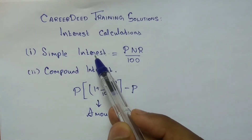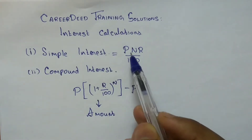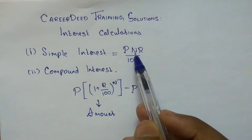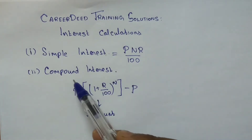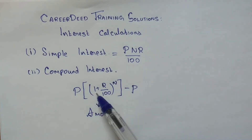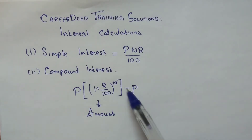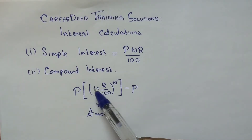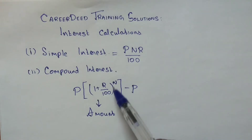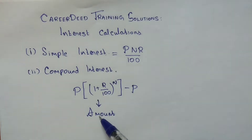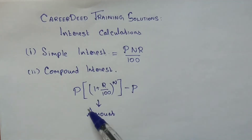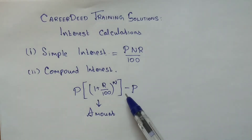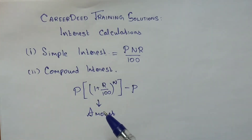The first type is simple interest, and the formula to find simple interest is P×N×R divided by 100, where P stands for principal, N stands for number of years, and R is rate of interest. The formula to find compound interest is P×(1 + R/100)^N minus P, where P×(1 + R/100)^N is the formula to find total amount. To find compound interest, subtract principal from the total amount.